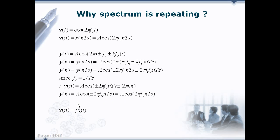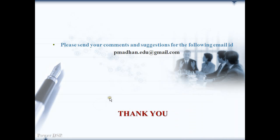So, if we consider F0 as a spectrum from minus Fs/2 to plus Fs/2, then it is repeating for all values of K from 1 to plus infinity and from minus 1 to minus infinity. Now you can understand clearly why the spectrum is repeating again and again in the frequency domain.